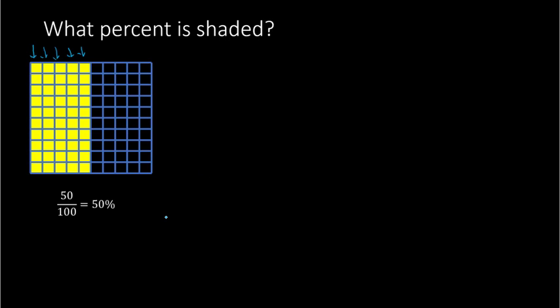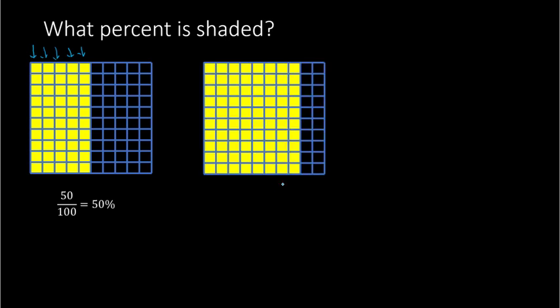For this next example, what percent is shaded? Here we have 1, 2, 3, 4, 5, 6, 7, 8 columns all shaded in. Each one has 10, so we have 80 little squares total shaded in. That's 80 out of 100, which would be 80% — it is 80 hundredths.